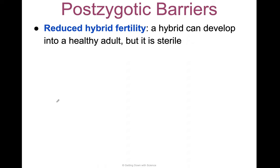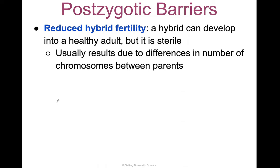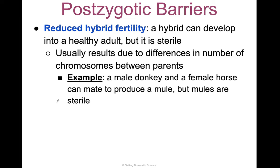Reduced hybrid fertility is a little nuanced because evolution only occurs when you can pass your genes to the next generation. A hybrid can develop into a healthy adult, but is sterile. This usually results from differences in the number of chromosomes between parents.